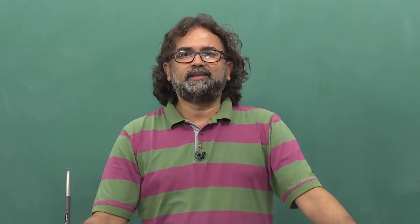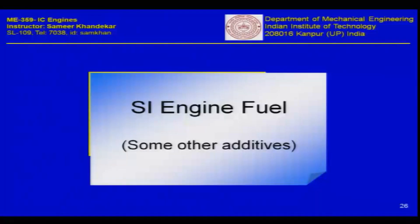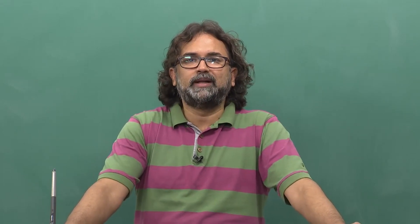In this lecture we have already seen SI engine fuels, what type of fuels and fuel constituents there are. We have also seen how to characterize a particular fuel in terms of its knocking characteristics, and we have seen a CFR engine in which you can test blends of fuels and determine their octane number on a scale of 0 to 100.